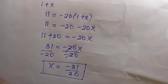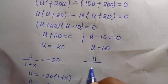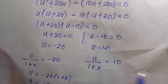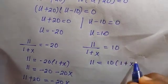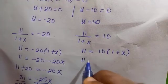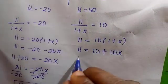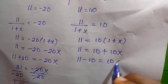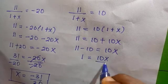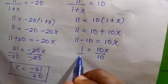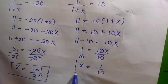For the second solution, we equate 11 divided by 1 plus X equals 10. Cross-multiplying gives 11 equals 10 bracket 1 plus X. Opening the parentheses on the right-hand side gives 10 plus 10X. Taking 10 to the left-hand side gives 11 minus 10 equals 10X, so 1 equals 10X. Dividing both sides by 10 gives X equals 1 divided by 10 as the second solution.